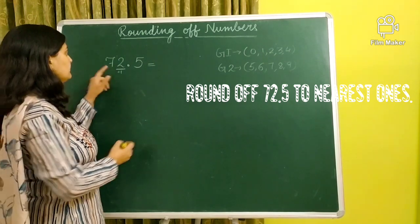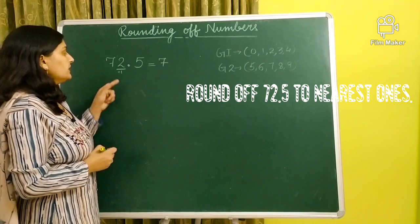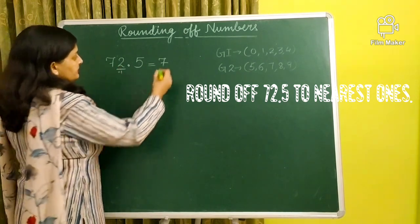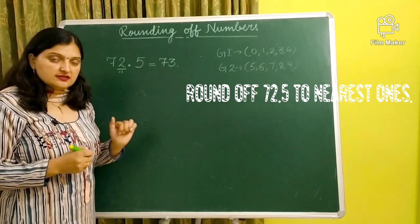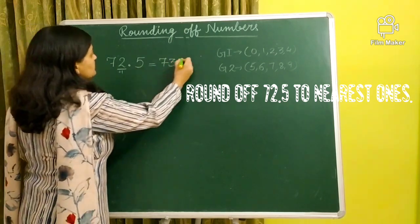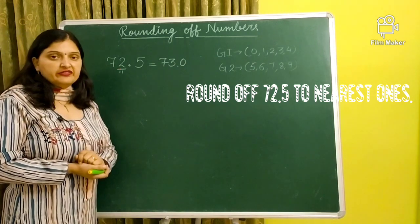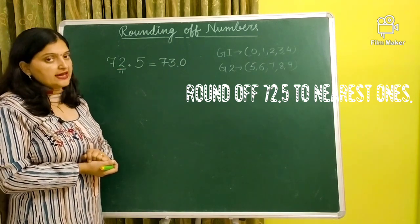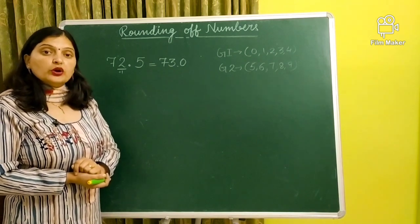Keep them same. Left me kya hai? Seven. So keep it seven. You had to add one to the underlined digit, so it became three. Point. All right digits, zeros their name. One digit means one zero. It means when we round 72.5 to nearest ones, our answer will be 73.0.